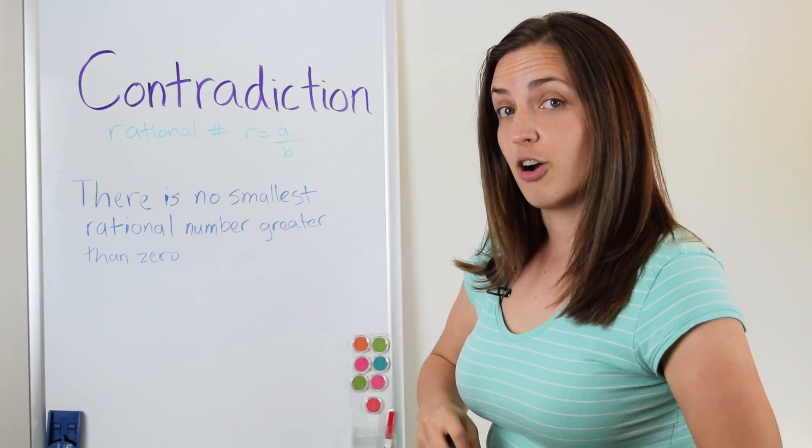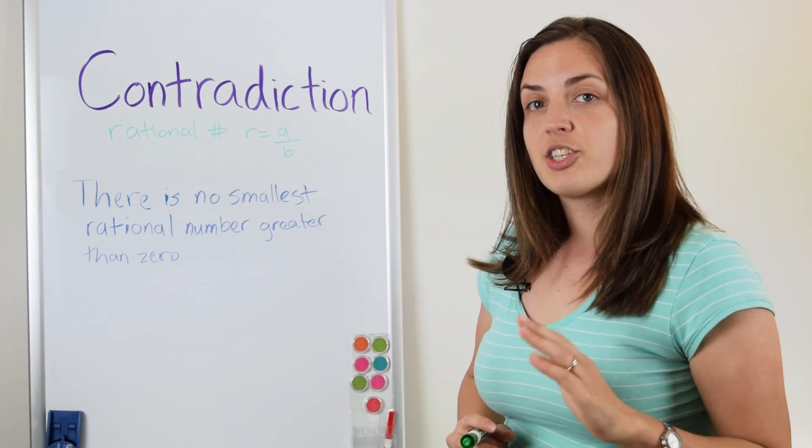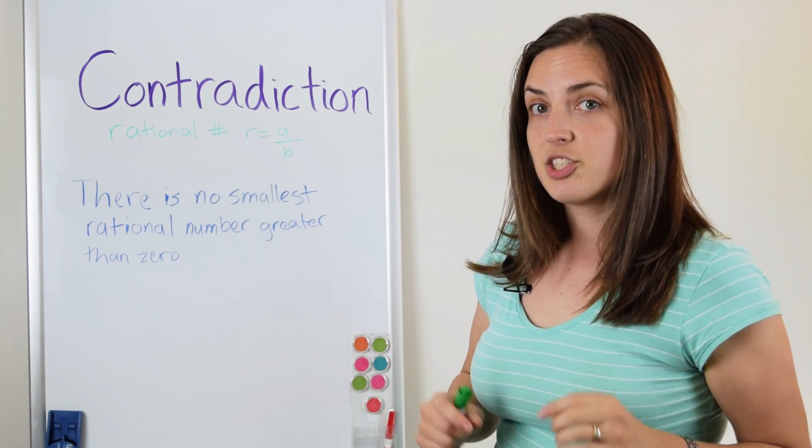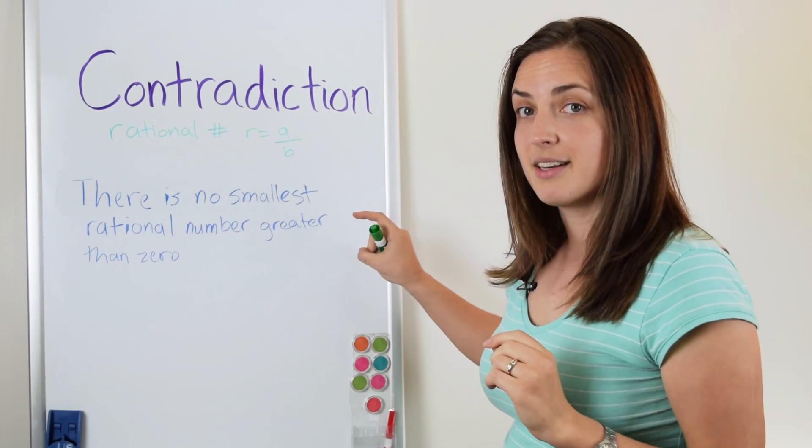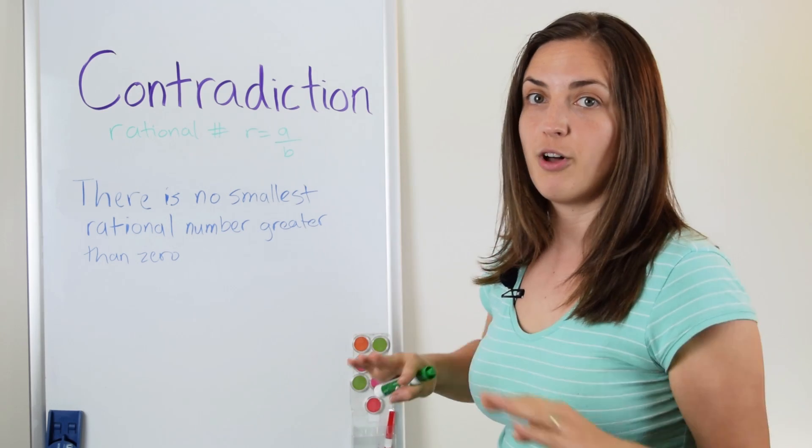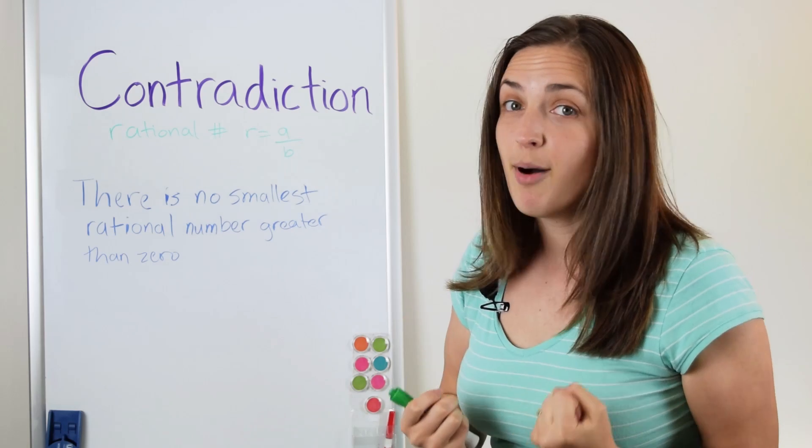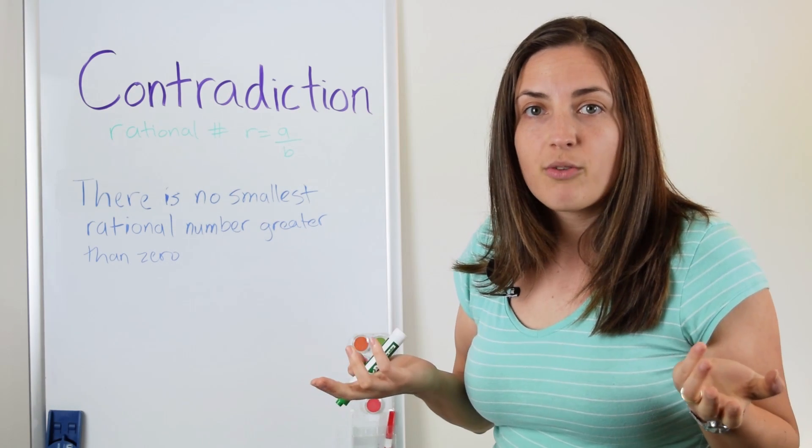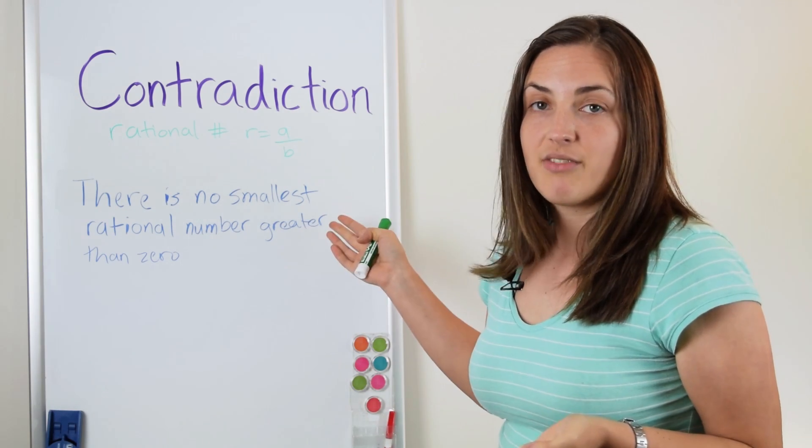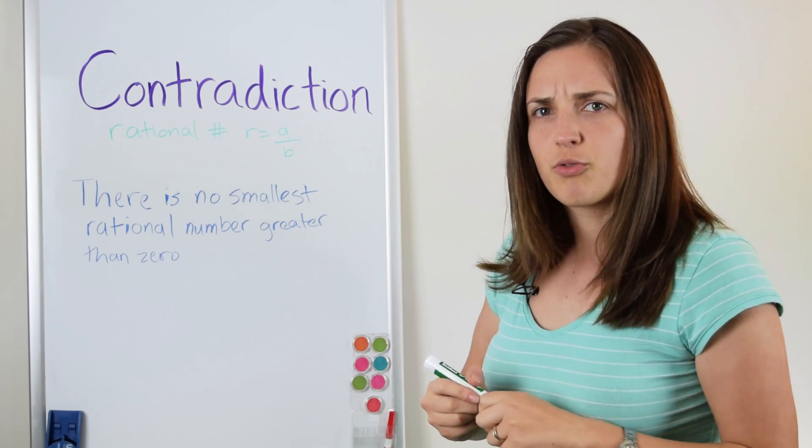The proof goes by contradiction. So what we're going to do in a proof by contradiction is to assume that our statement that we are trying to prove is false. And then we're going to derive a contradiction and show that that's an impossibility. So what must have gone wrong? Well, our statement must have actually been true. So let's work through the details.